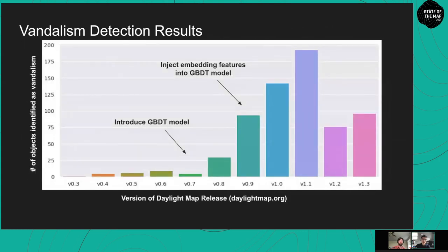Since deploying the machine learning model with embedding features into production, the number of objects identified as vandalism at each Daylight release has increased significantly — which likely means our model is getting better. It is worth mentioning that minor issues such as typos are not counted as vandalism according to the OSM definition, although they will still be fixed by our mappers, so the actual number of fixes is much higher than this plot shows.